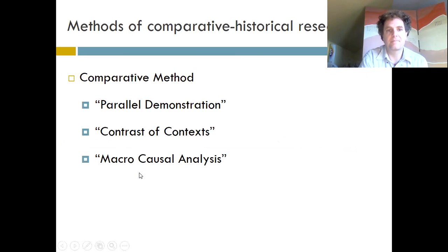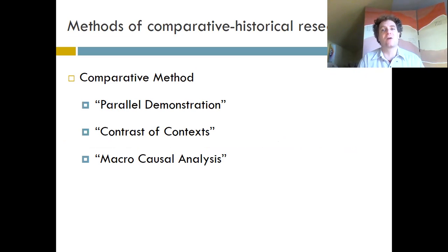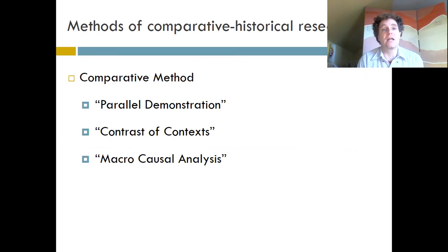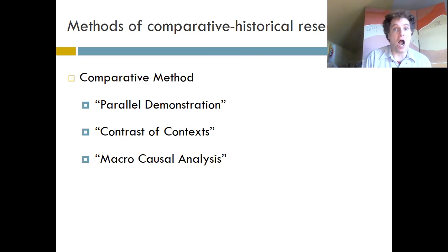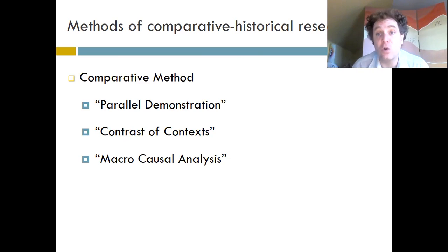Now let me talk about two more specific methods within this general framework of comparative historical research. Like historians, comparative historical researchers tend to use historical documents — government reports, newspapers from the past, records — as the data they use, examining these documents as a window into the past. But the question then becomes: what are we doing with them? There are two methods which allow comparative historical sociologists to use this material.